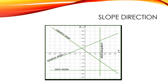For a zero slope, Y does not change as X increases, so the line is exactly horizontal. The slope of any horizontal line is always 0. The line goes neither up nor down as X increases, so its slope is 0.